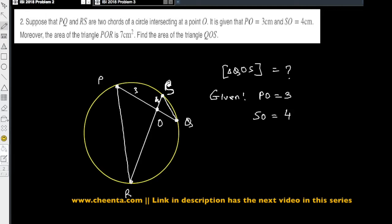And area of triangle P, O, R, so the area of this triangle is 7 square centimeters, right?